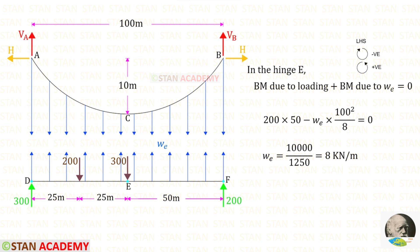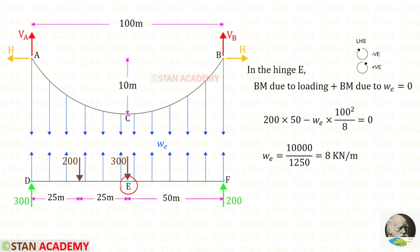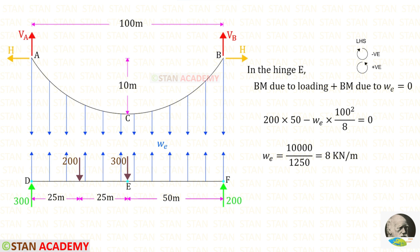Now we are going to find the equivalent uniformly distributed load WE. We know that at hinge E, when we add the bending moment due to the loading and the bending moment due to WE, it will be zero. At hinge E, let us find the bending moment due to loading from F — the reaction 200 is anticlockwise, positive, distance 50, so 200 into 50. The formula for bending moment due to equivalent load WE is minus WE L squared upon 8, where L is 100. Finally, for the equivalent uniformly distributed load we will get 8 kilonewton per meter.